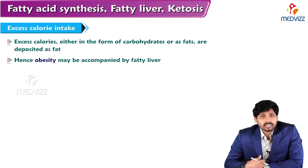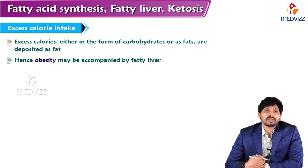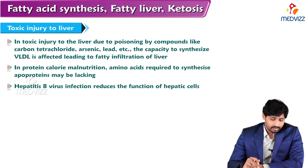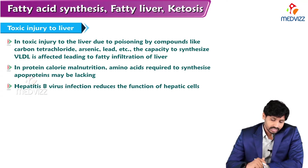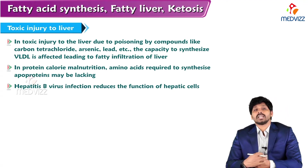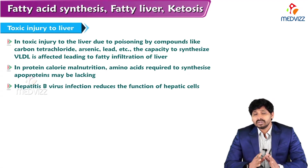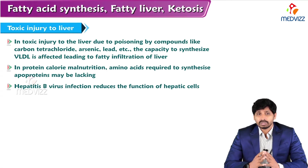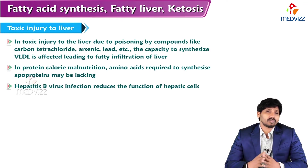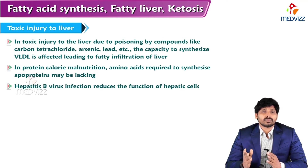Next is excess calorie intake. Excess calories, either in the form of carbohydrate or fat, are deposited as fat and hence may be accompanied by fatty liver. Toxic injury to the liver due to poisoning by compounds like carbon tetrachloride (CCl4) and arsenic, lead, etc. The liver is not only for sensing components — it is also a detox organ. In case of toxic injury, liver cells stop working, there is no production of VLDL, and there is no outgoing of TAG from the liver.